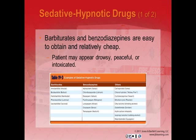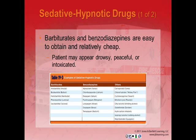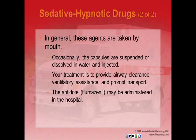Sedative hypnotics: barbiturates and benzodiazepines are easy to obtain and relatively cheap. These CNS depressants alter level of consciousness similarly to alcohol — patients may appear drowsy, peaceful, or intoxicated. Generally taken by mouth, though capsules are occasionally dissolved in water and injected. Tolerance develops quickly. These drugs may also be given to unsuspecting people as a 'knockout drink.' Treatment involves airway clearance, ventilatory assistance, and prompt transport. A benzodiazepine antidote, flumazenil (Romazicon), can be administered intravenously in the hospital but is not a pre-hospital drug in Montana.